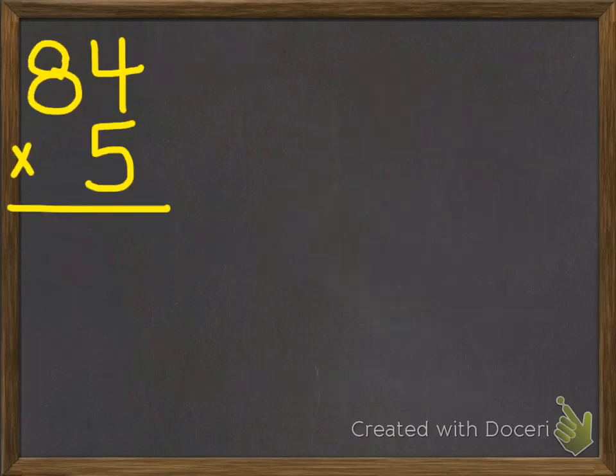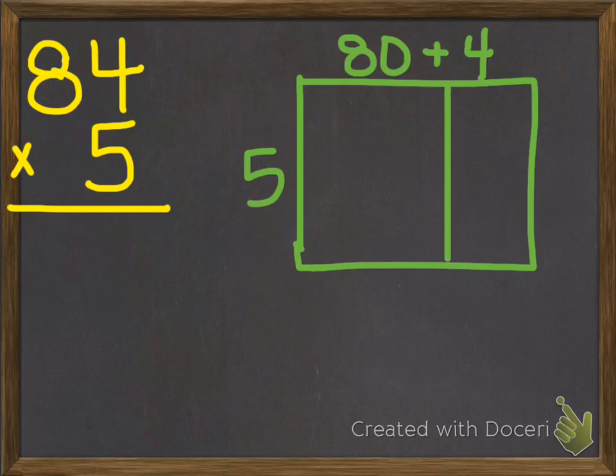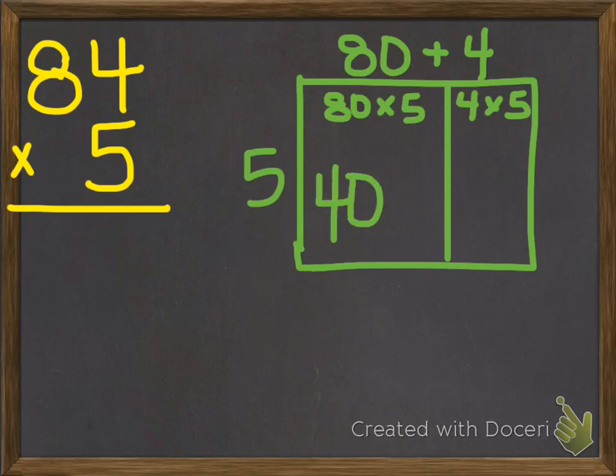Let's try another one. 84 times 5. 80 plus 4. 5 is already in expanded form because it only has a value in the ones place. Now we know in this box, that would be 80 times 5. And in this box, that would be 4 times 5. First, let's complete this area model over here. 80 times 5 is 400. And 4 times 5 is 20.